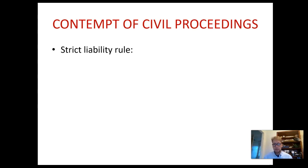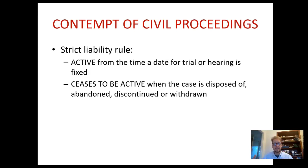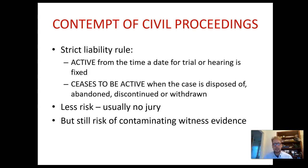Up until now I've been talking about criminal cases, but of course there are civil proceedings going on and they also carry a risk of contempt. Civil proceedings — remember, a dispute between individuals or an individual and an organisation — become active from the time that a date for the trial is fixed. They cease to be active when the case is disposed of or a decision is made. There's no jury in a civil proceeding, so like appeals it's very unlikely you're going to prejudice proceedings, but it can still be risky if you were to contaminate witness evidence.